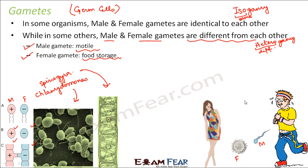We will hereafter study how these gametes are produced in different organisms, focusing mainly on animals and primarily taking the example of human beings. We will see how the male gamete is produced, how the female gamete is produced, how fusion takes place between male and female gametes to produce the zygote, and then how the zygote develops into the baby.